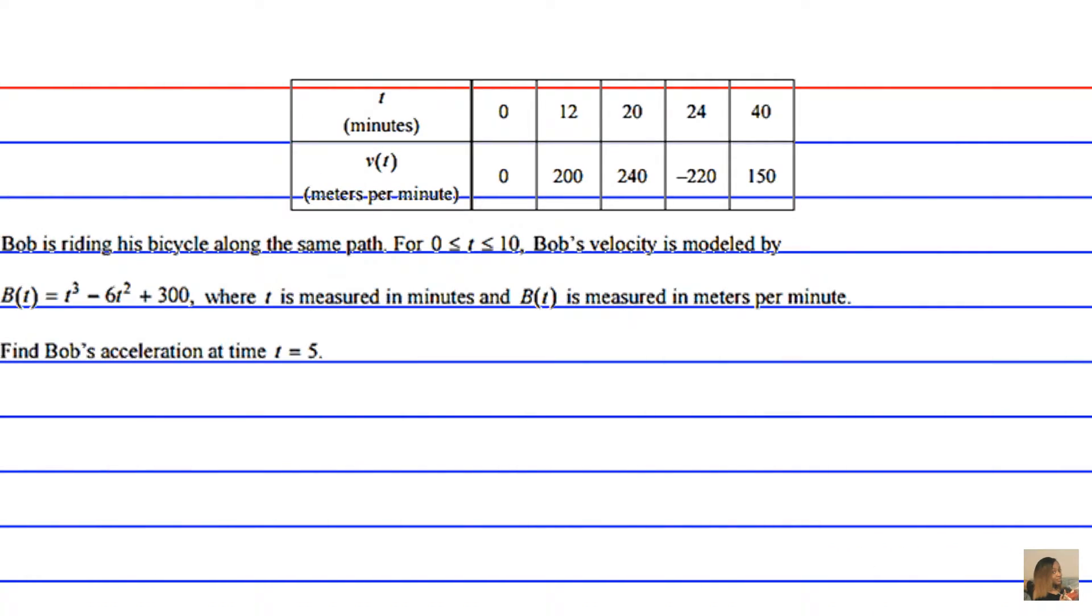All right, so in order to figure out Bob's acceleration we don't necessarily need any information about Johanna. That's extraneous information. All the information we need to know to figure out the acceleration is contained here in the model or the function b of t.